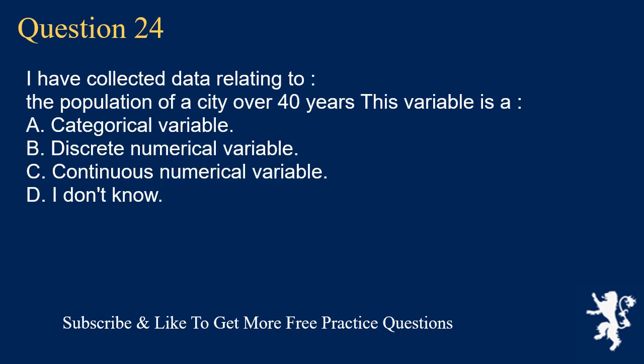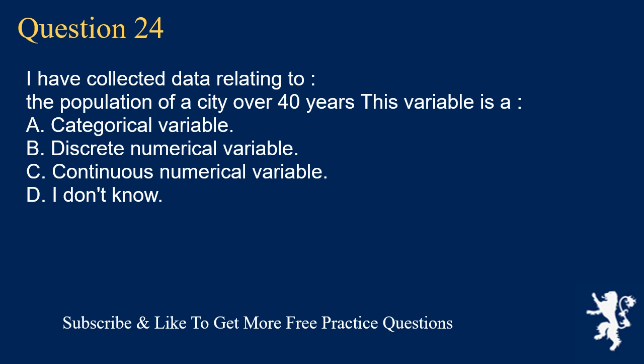Question 24: I have collected data relating to the population of a city over 40 years. This variable is A. a categorical variable, B. discrete numerical variable, D. I don't know. The correct answer is B, discrete numerical variable.